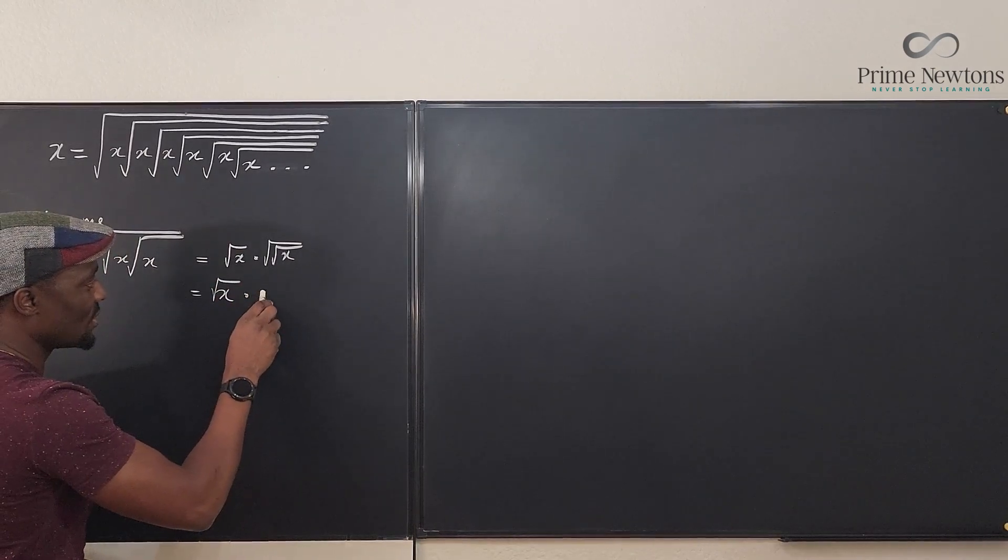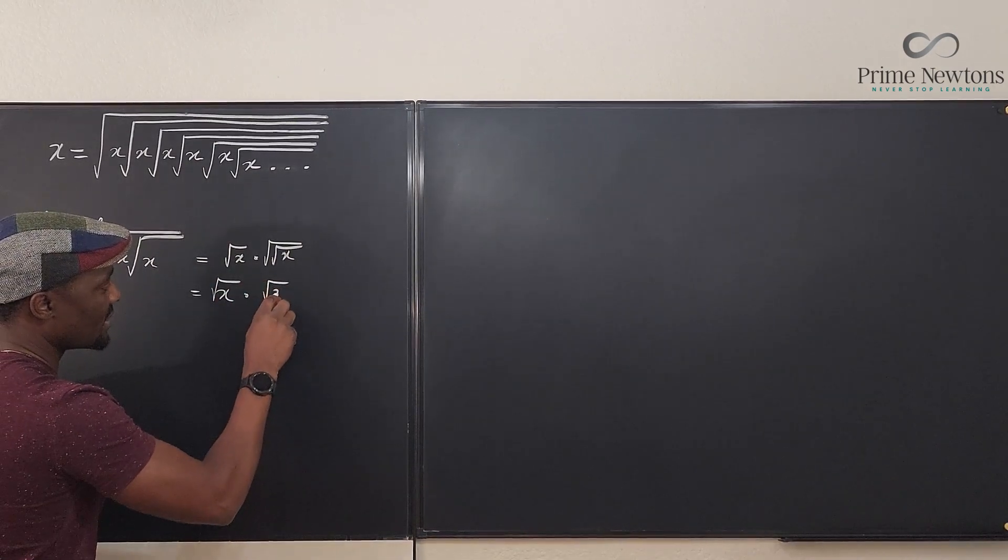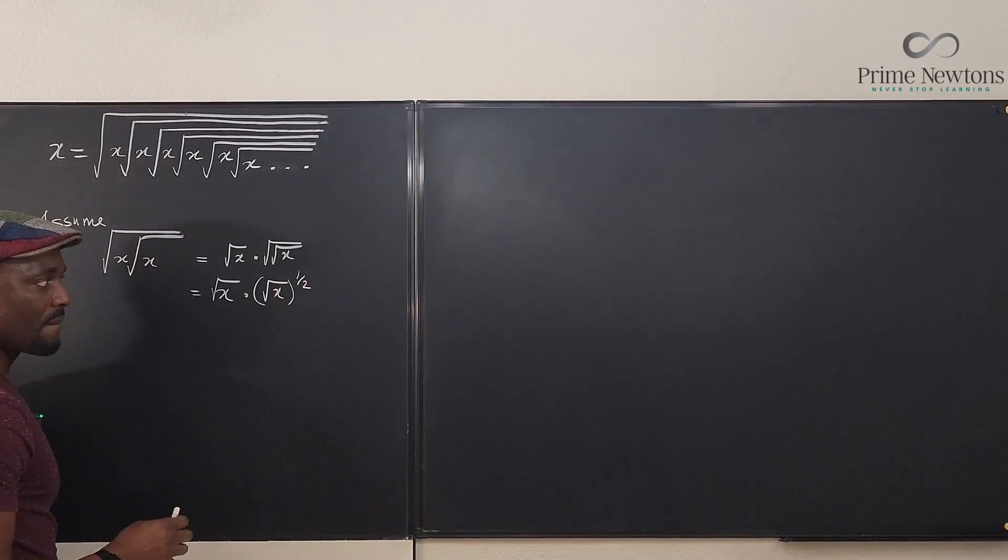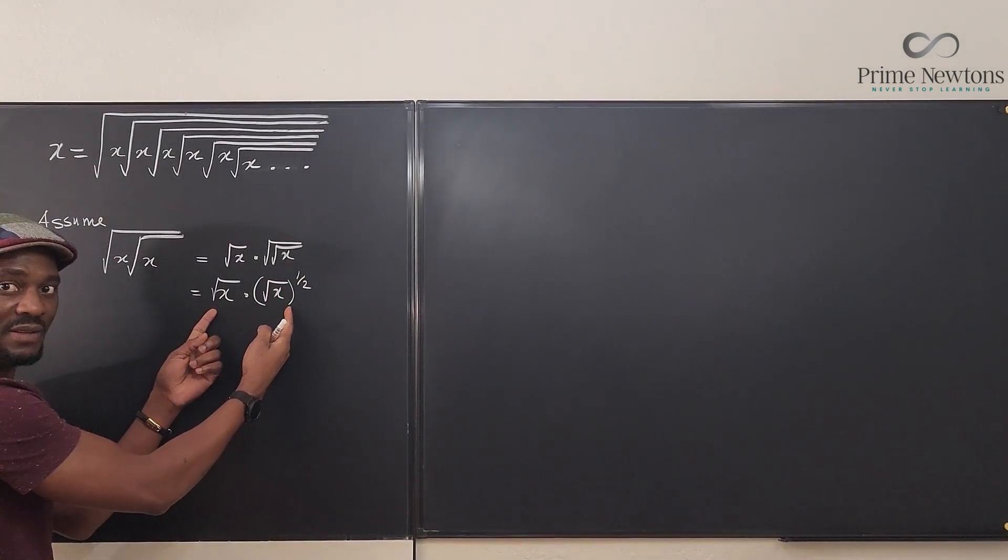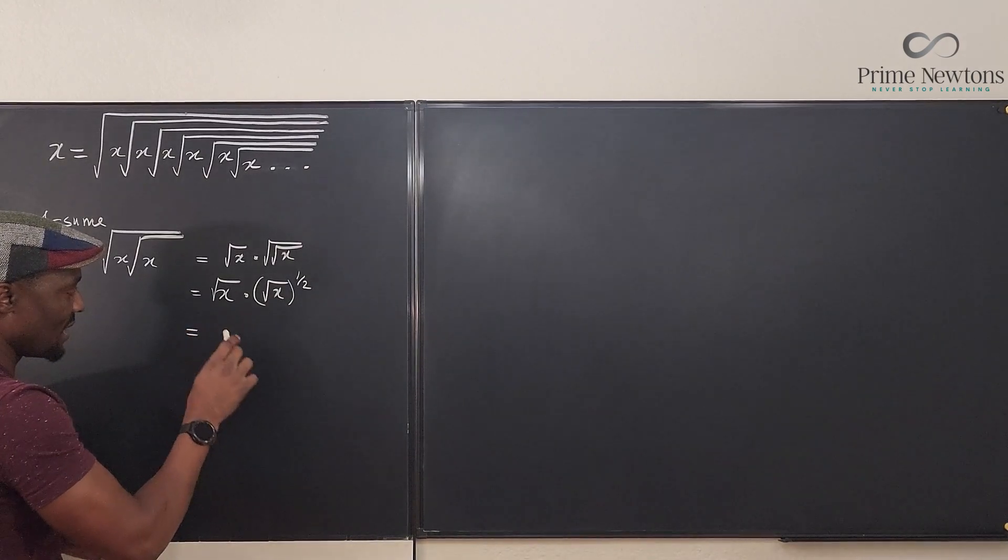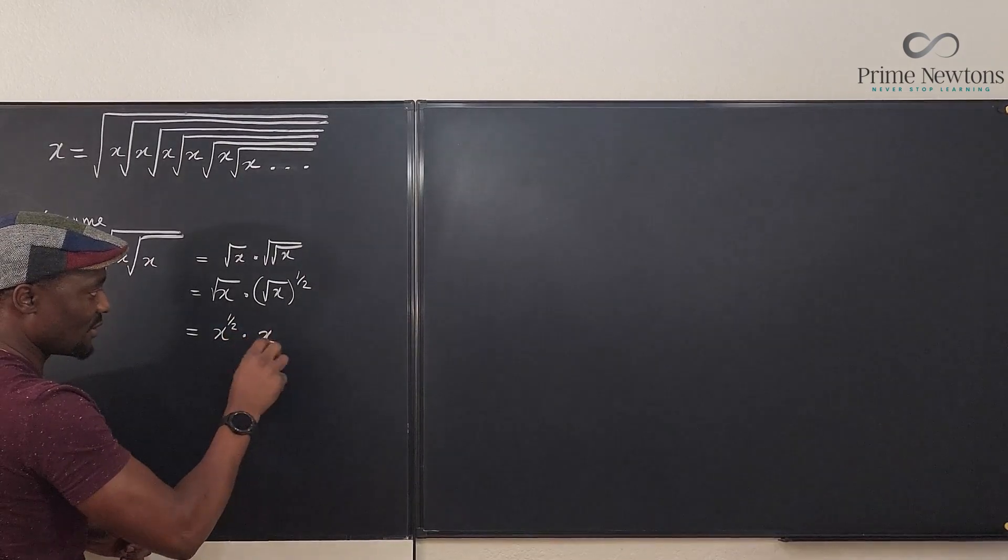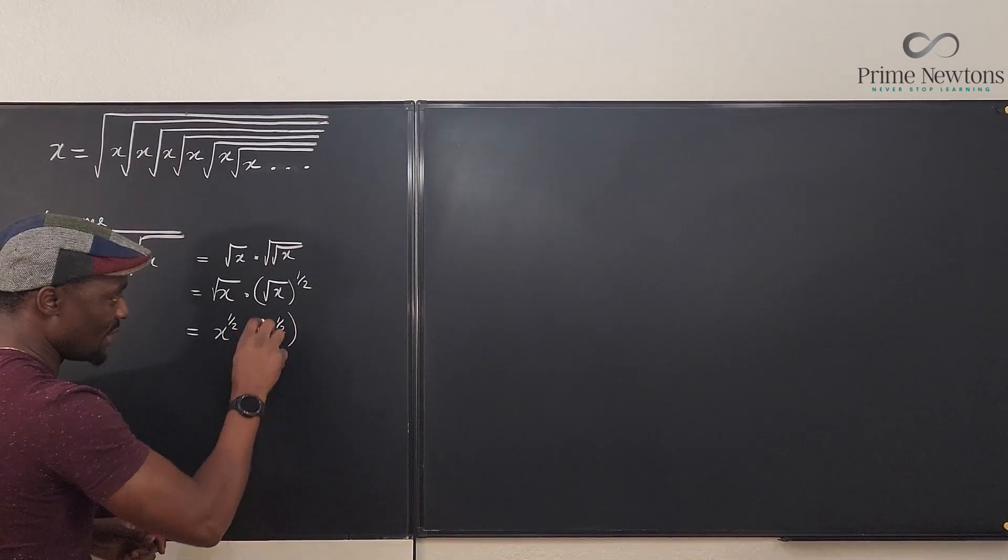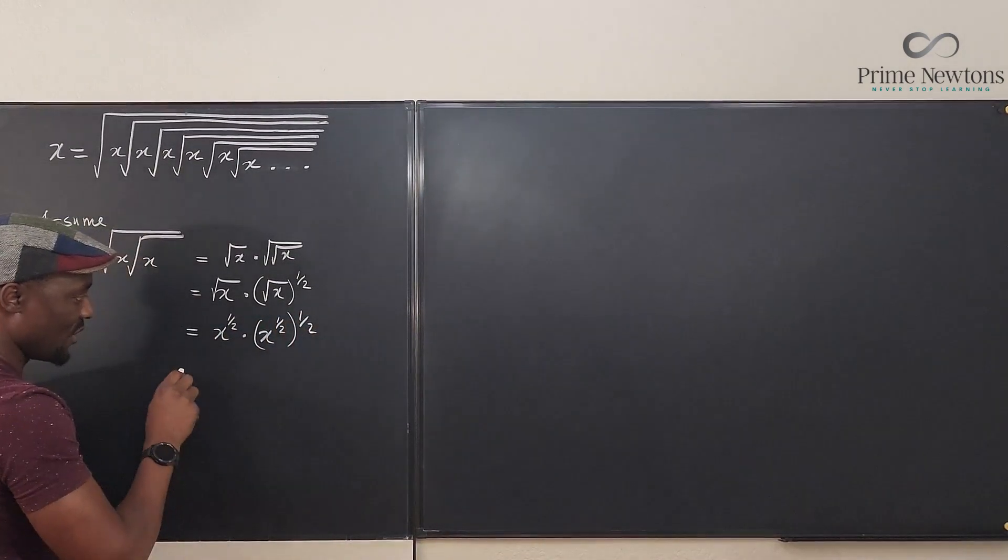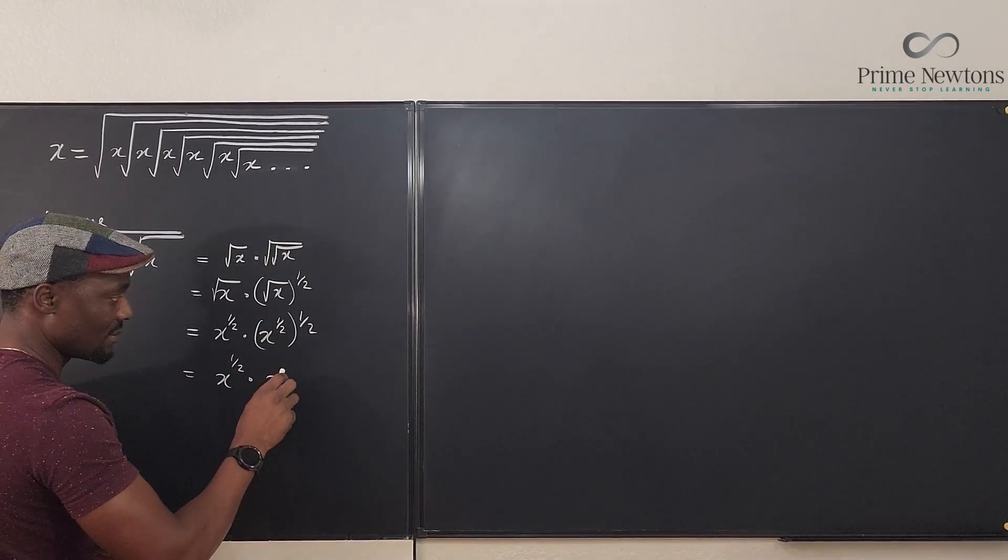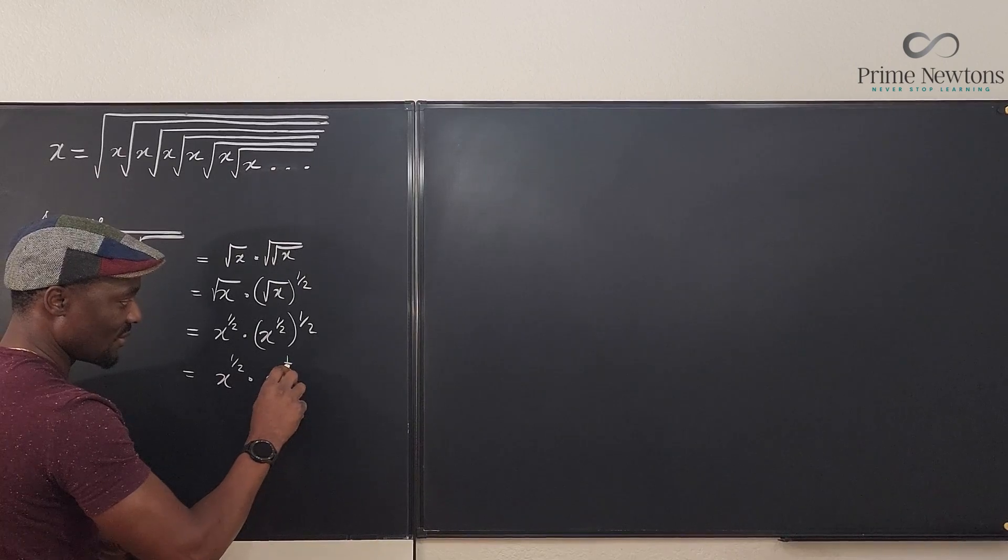Or you can say it's just the square root of x raised to power one half. Which is the same thing as x to the one half times x to the one half raised to one half, which is x to the one half times x to the one fourth.